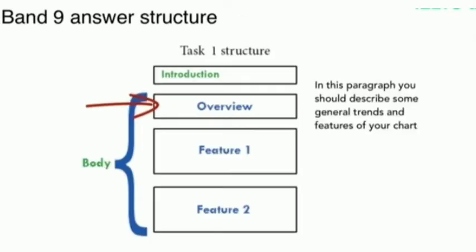Now let's see what the structure of Task 1 is, so you can achieve good bands. In the first paragraph you write the introduction — introduction means you rephrase the statement. In the second paragraph we write the overall: the overall contains the highlighted features and the main trend being followed in the graph.